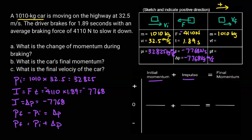We can see that right here as well — if we add those two numbers, we get the final momentum. Taking 32,825 minus 7,768, that gives me 25,057.